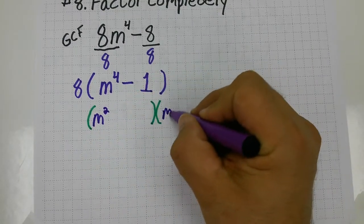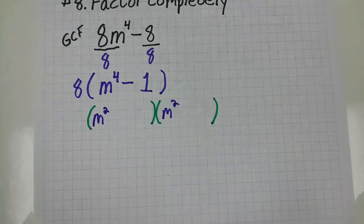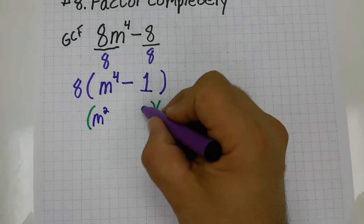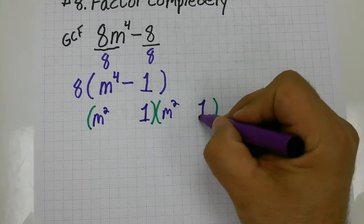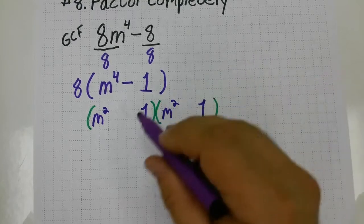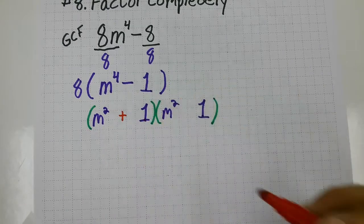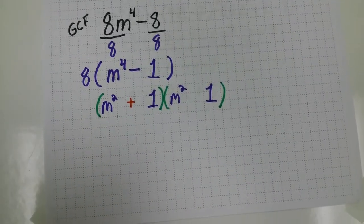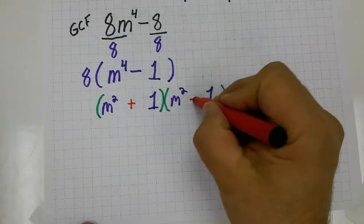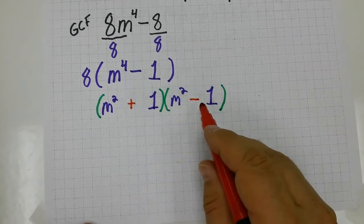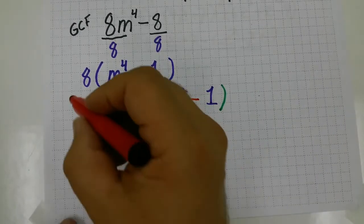And one times one equals one. The signs are going to alternate because that's what always happens with the difference of two perfect squares—the signs alternate. So one's going to be plus and one's going to be minus. Let's not forget about our 8 out in front.